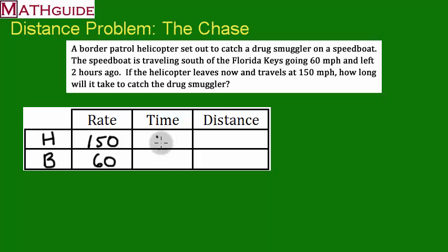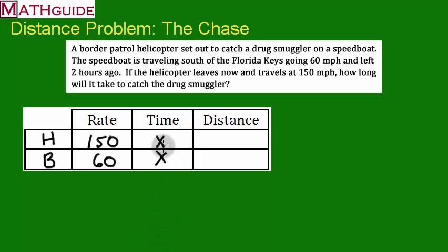What some people would do is put X for time, but that's only partially correct. The problem is that the boat is traveling for a longer period of time — it's got a two-hour head start. Since we know the boat is traveling for two hours longer, although both times are unknown, the boat will always travel two hours more than the helicopter. I prefer to stay away from negatives, so I put the plus two: the boat's time is X plus 2.